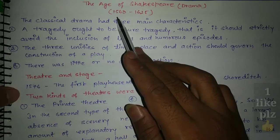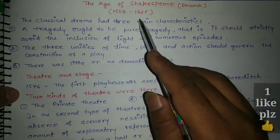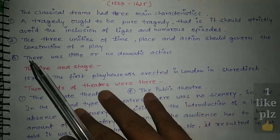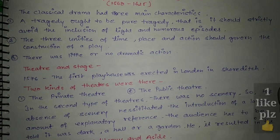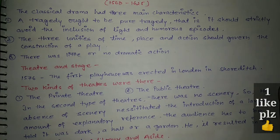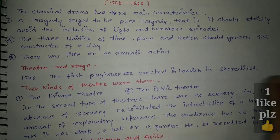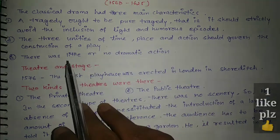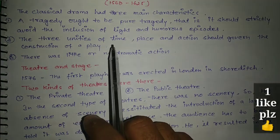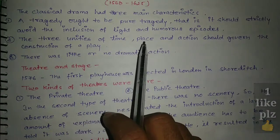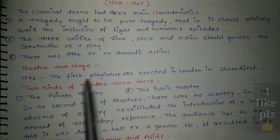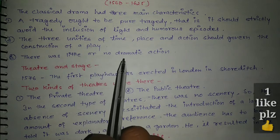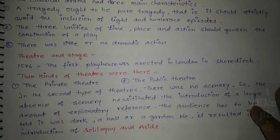The period for drama was 1568 to 1625. Classical drama had three main characters in this age. Tragedy ought to be pure tragedy — it should strictly avoid the inclusion of light and humorous episodes. The three unities must be followed: unity of time, unity of place, and unity of action should govern the construction of a play. There was little or no dramatic action in the drama.